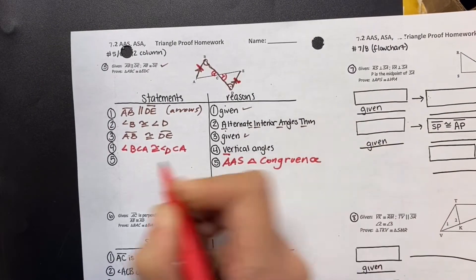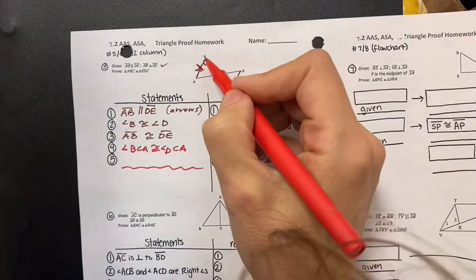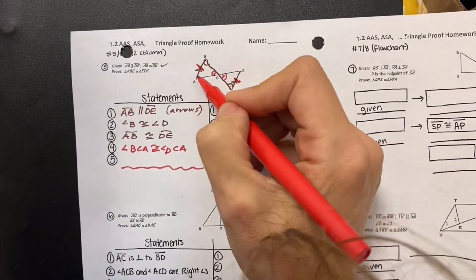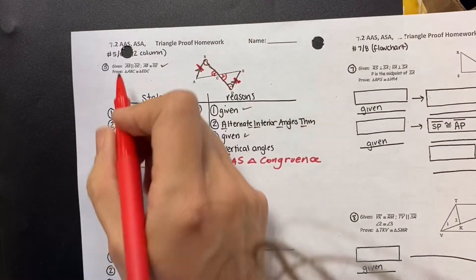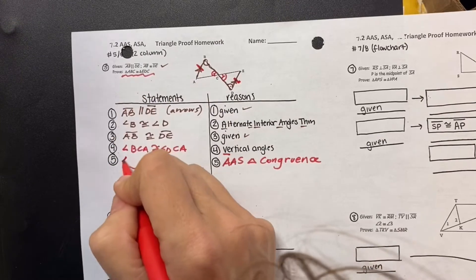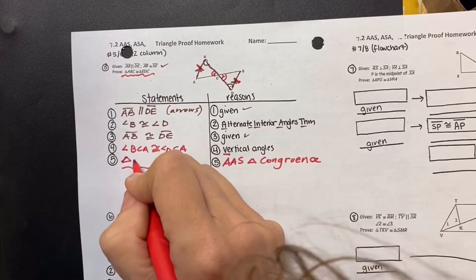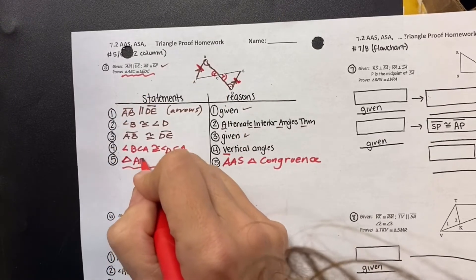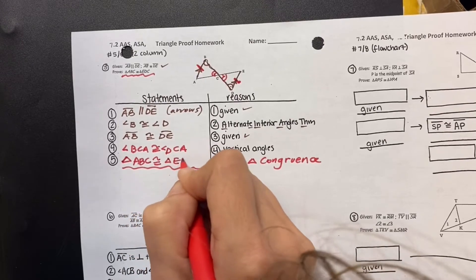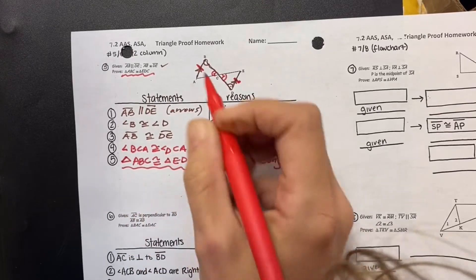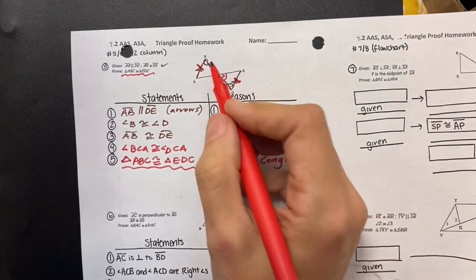And now there's more than one way to name these, but I'll name them by first angle, second angle. I've got a proof statement, so I can just copy that down: triangle ABC has to be congruent to triangle EDC. ABC, EDC — beautiful.